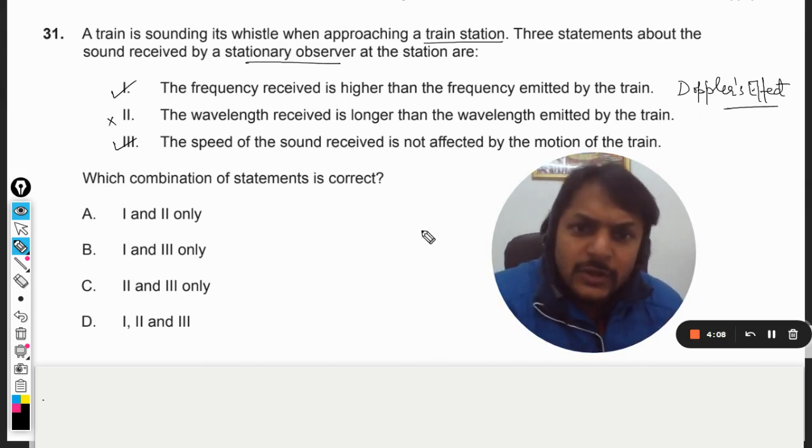I tell you, the formula is velocity into wavelength into frequency. So if frequency is increased, the wavelength has to reduce because velocity has to be constant.